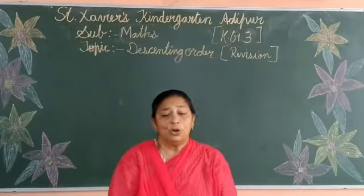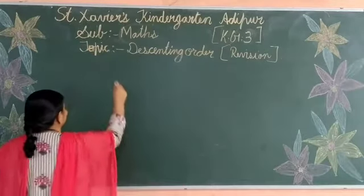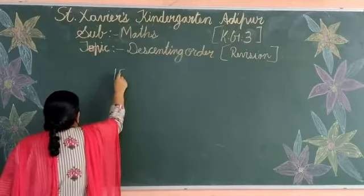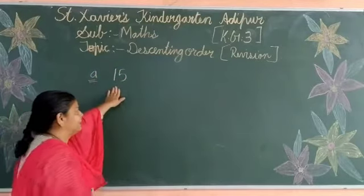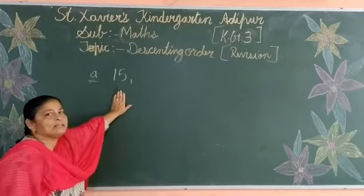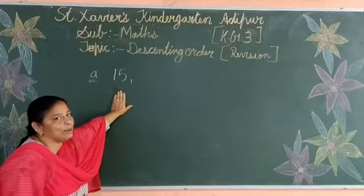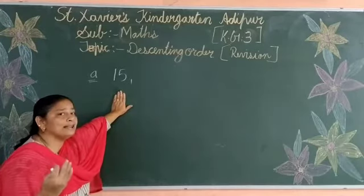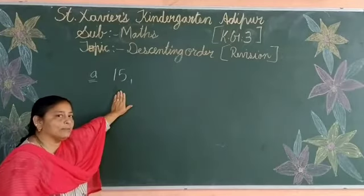So all of you look at the board. Here we have a given question. We will write 4–5 numbers in descending order. So descending order is what? Biggest number to smallest number.